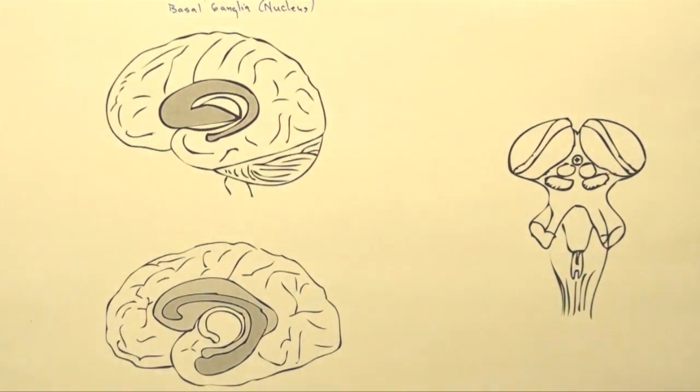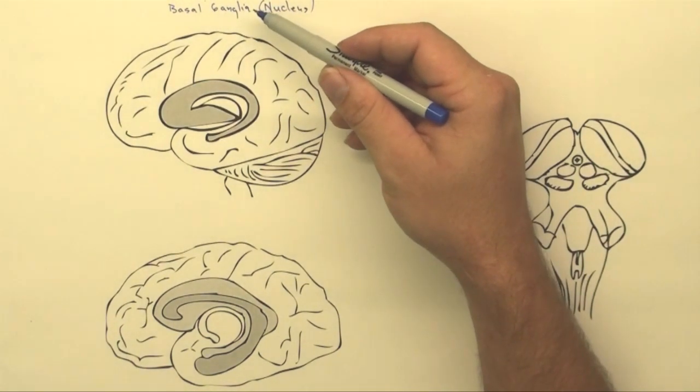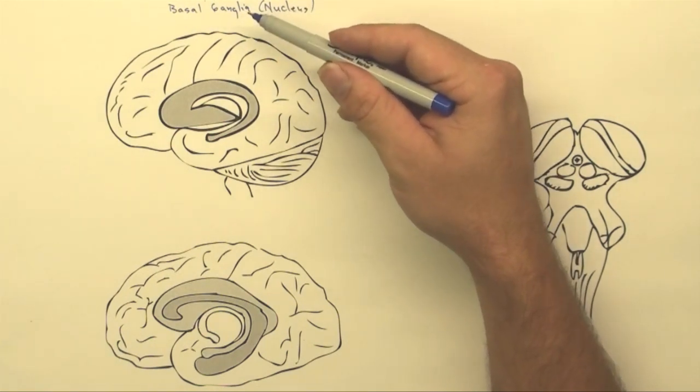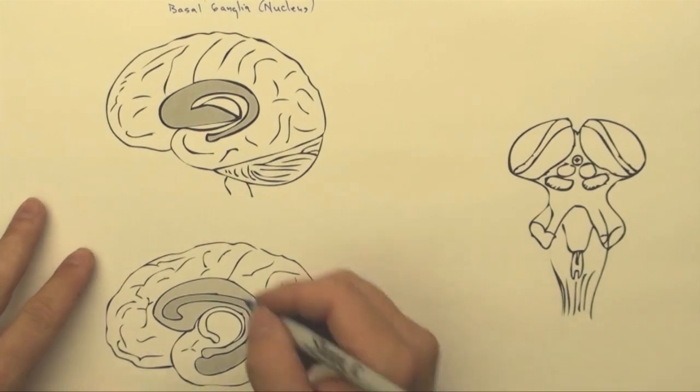It technically should be called a nucleus because a nucleus is a group of cells working together in the central nervous system. A ganglia is a group of cells working together in the peripheral nervous system. So since this is technically a group of neurons working together in the central nervous system, it should be called a nucleus. But it's been historically just called the basal ganglia. So we'll go with basal ganglia or sometimes I'll say basal nuclei.